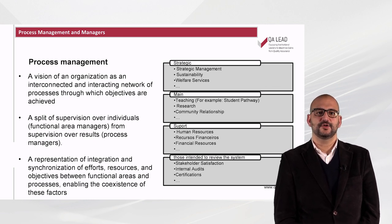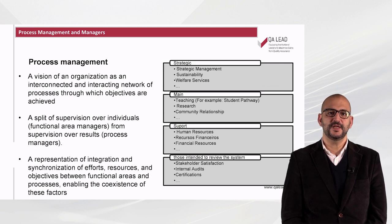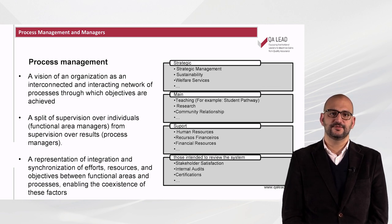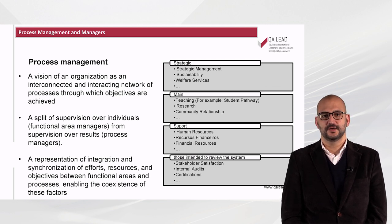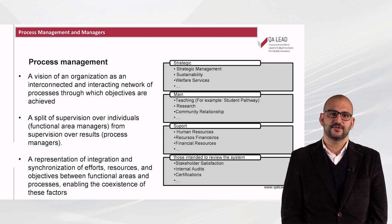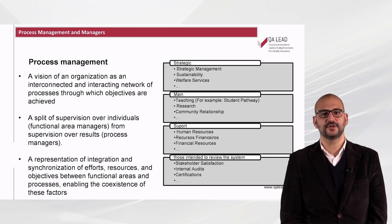We can have processes of many kinds. For instance, strategic ones, such as strategic management, sustainability, welfare service, and so on. The main ones, such as teaching, for example, student pathway, research, community relationship, and others. The supporting ones, such as human resources, financial resources, material resources, and so on. And those intending to review the system, like stakeholder satisfaction, internal audits, certifications, etc.